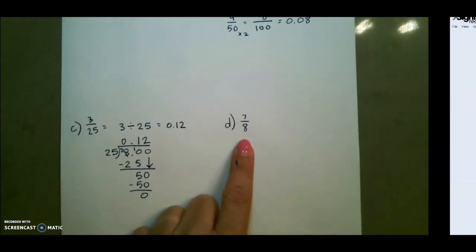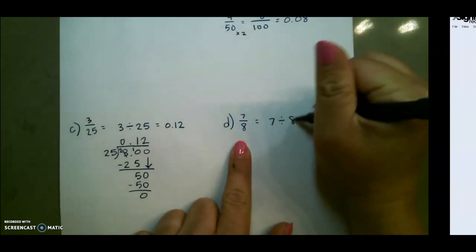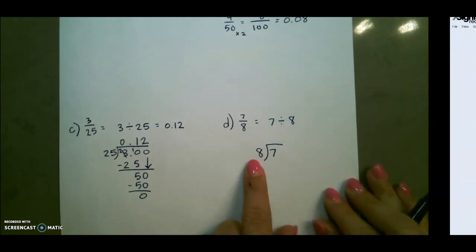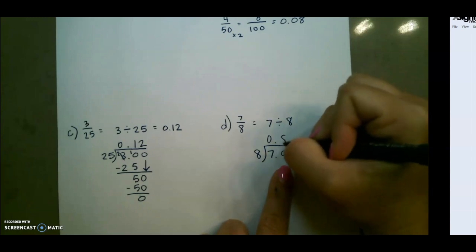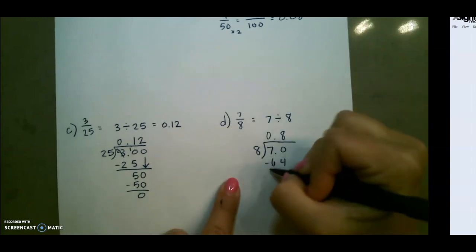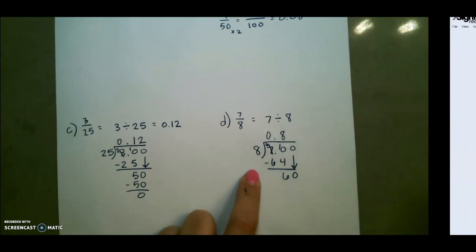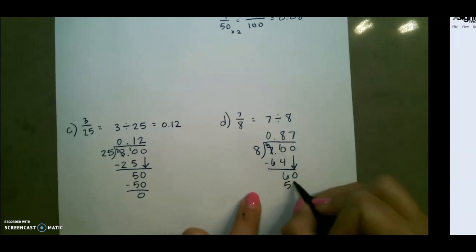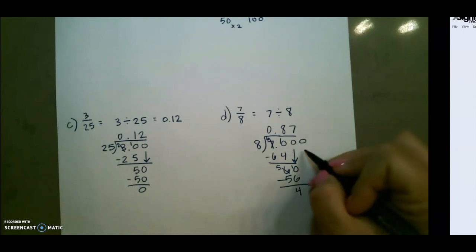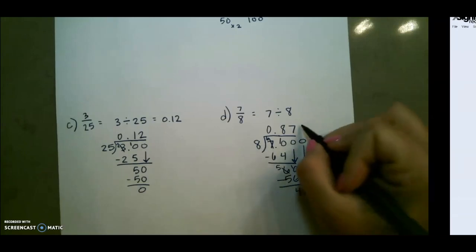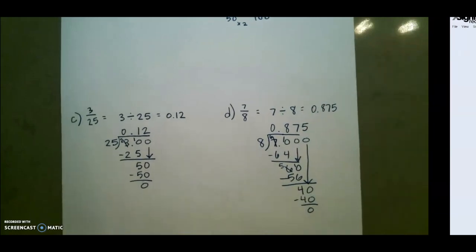This would be a good place to pause the video to see if you can solve this one on your own, or you can continue watching to see how I solve it. Since 8 is not a multiple of 10, I'm going to do 7 divided by 8. Since 8 cannot go into 7, I want to add a decimal and a 0. 8 goes into 70, 8 times; 8 times 8 is 64, and now I subtract: 70 minus 64 is 6. Add a 0 and bring it down. 8 goes into 60, 7 times; 7 times 8 is 56. Subtract: 60 minus 56 is 4. Add another 0 and bring that down. 8 goes into 40, 5 times evenly. So our answer is 875 thousandths, or 0.875.